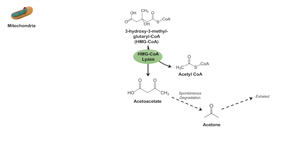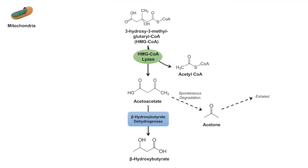There's also another reaction. Instead of acetoacetate becoming spontaneously degraded, it can undergo another enzymatic reaction with the enzyme beta-hydroxybutyrate dehydrogenase, which produces beta-hydroxybutyrate. Beta-hydroxybutyrate is the most abundant ketone body — the primary ketone body that is produced. This reaction actually requires NADH; it's an NADH-dependent reaction. Once we have beta-hydroxybutyrate, it can be exported out of the liver hepatocyte into the blood to be used by other tissues.